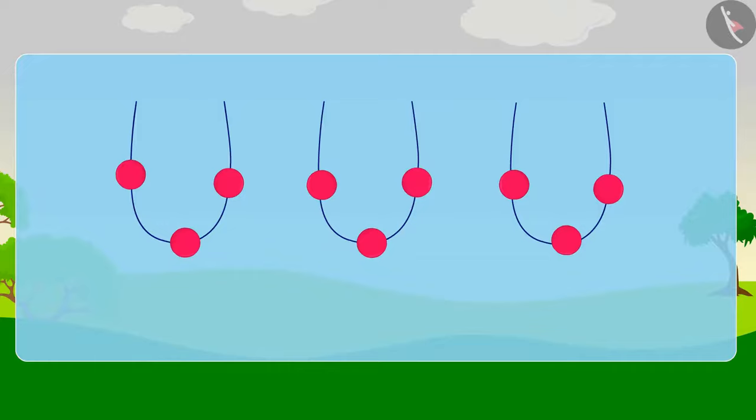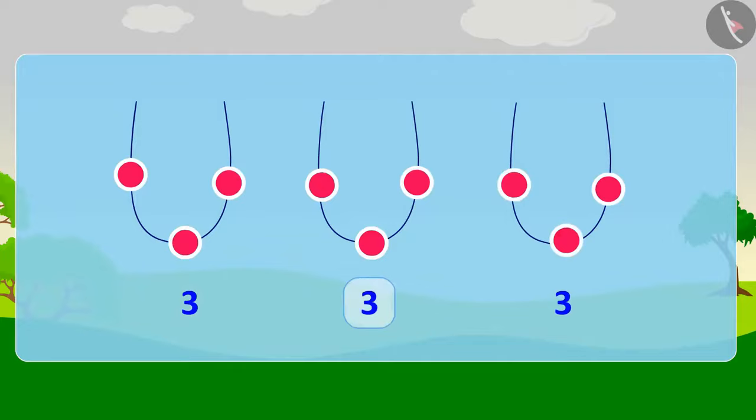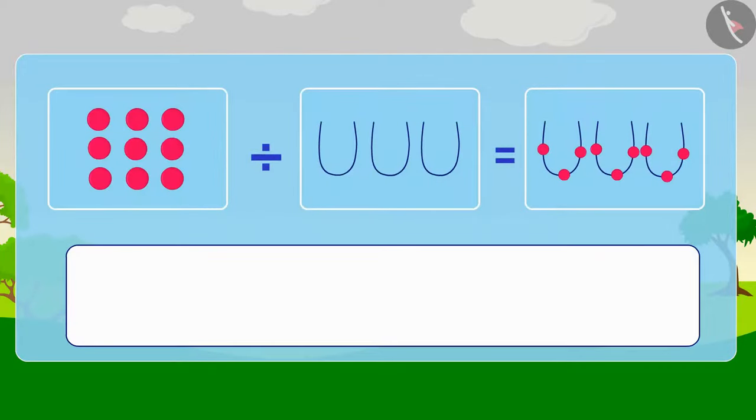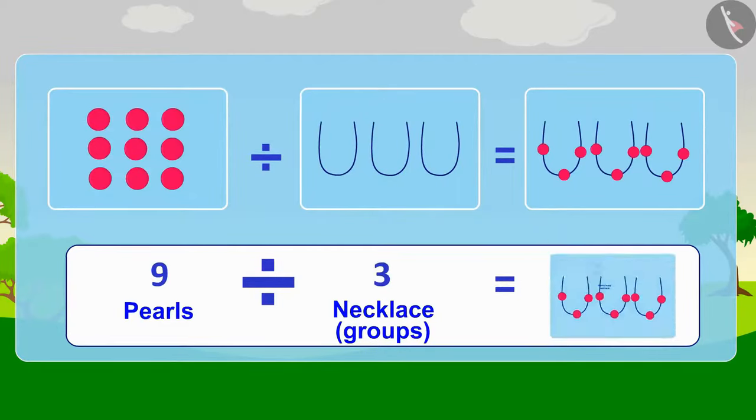Let's see how many pearls are there in each necklace. Yes, each necklace has three pearls. In other words, Appu's nine pearls were divided into three equal groups, and each group had three pearls.